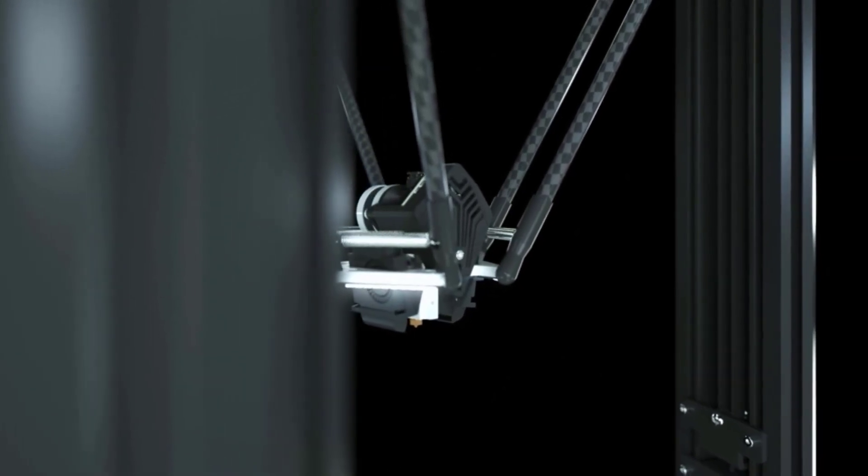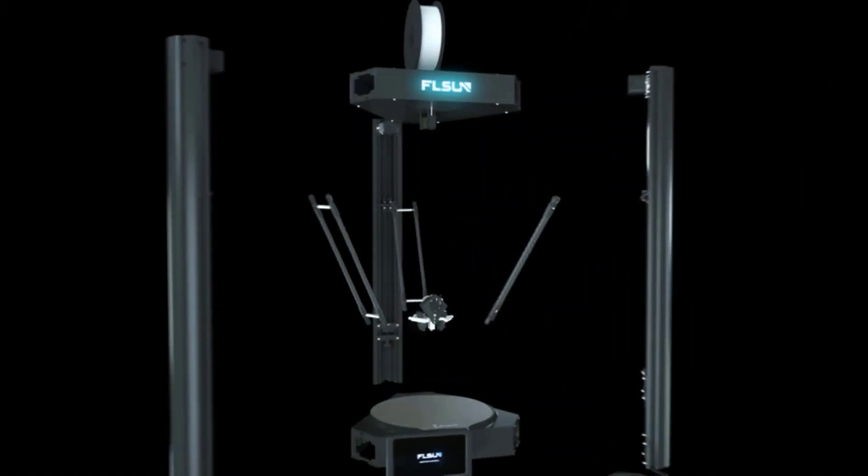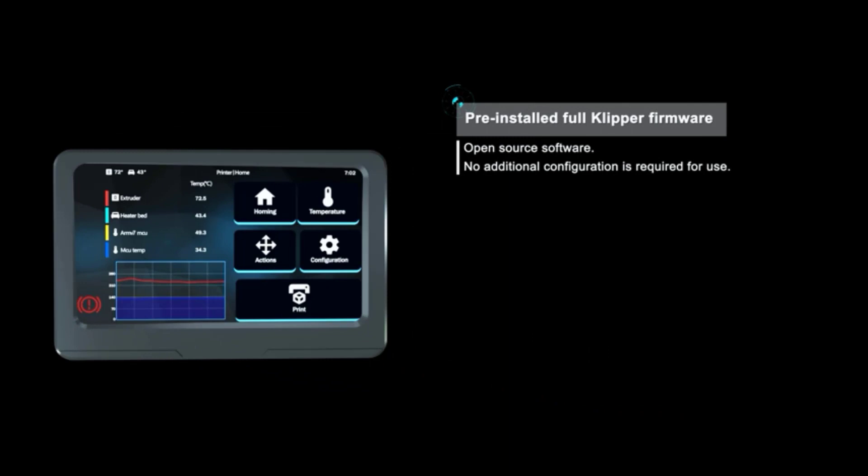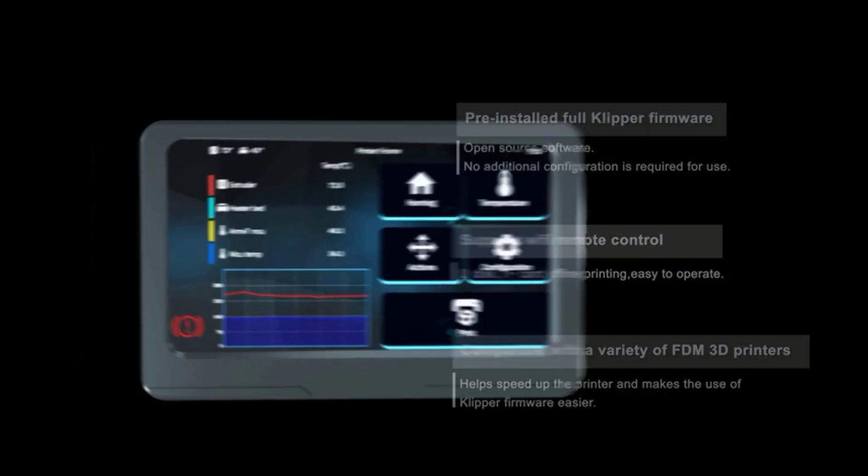Not only does it have a fantastic build volume for the price, especially the ability to print tall parts, but it also comes with an upgraded lattice glass print bed, allowing for faster heating up to 100C in under 5 minutes, less warping and better adhesion during 3D printing. This is perfect for materials such as ABS filament, which are known to warp significantly under the wrong conditions.